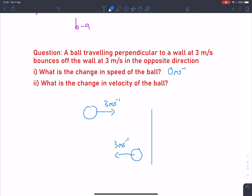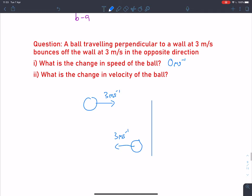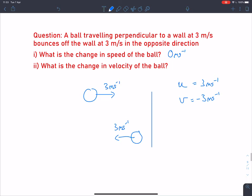However, with the change in velocity, velocity is a vector. It was initially going at 3 metres per second, so my initial velocity is 3. My final velocity, as it's moving in the opposite direction, would be minus 3. The difference between those, the change in velocity, would be 6 metres per second.